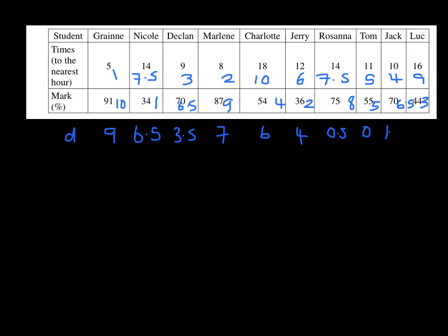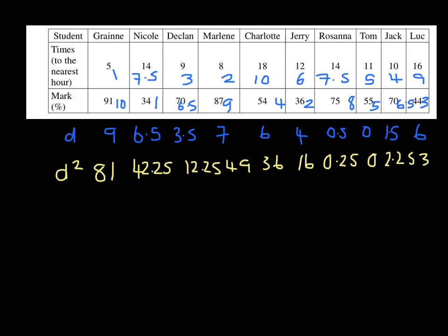So if I now go through and square d, I have 81, 42.25, 12.25, 49, 36, 16, 0.25, 0, 2.25, and 36.